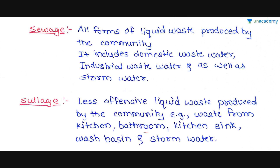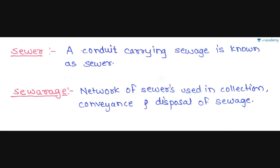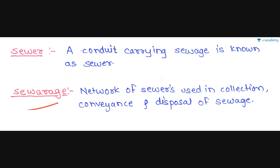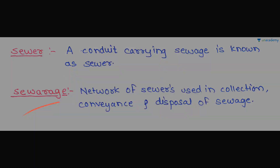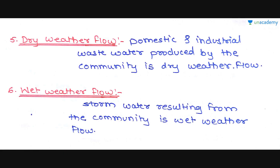A sewer is a conduit carrying sewage — the pipe which carries sewage or wastewater is known as a sewer. The sewerage is the network of sewers used in the collection, conveyance, and disposal of sewage. This network of sewers is known as the sewerage system.